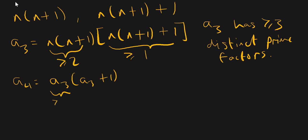...you'll see there are at least three distinct prime factors contributed from the first term, and at least one from the second term. So a4 is going to have at least four distinct prime factors, and a_n will have at least n prime factors. Since I can keep building this sequence — because there are infinitely many positive integers — that means I can find an infinite number of prime factors, which means there must be infinitely many primes.